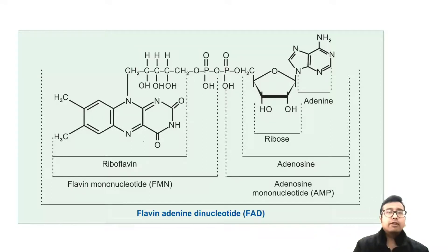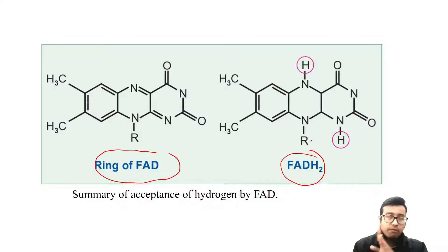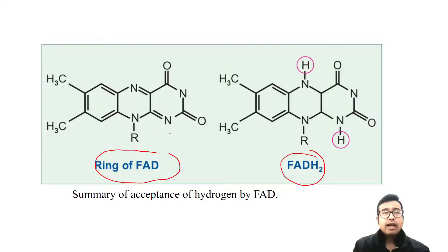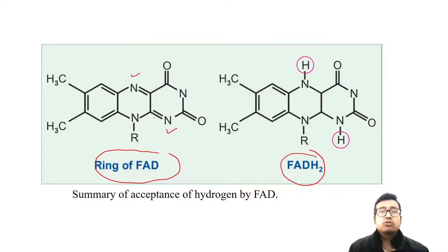Of course, the structure will have the parent riboflavin along with adenosine. This is the ring of FAD and this is FADH2. In reactions that use FADH2 as a reducing equivalent, FAD is converted to FADH2 when two hydrogen atoms are attached — attached to 2 free nitrogen atoms. This is an MCQ image-based question point; just remember those two positions.